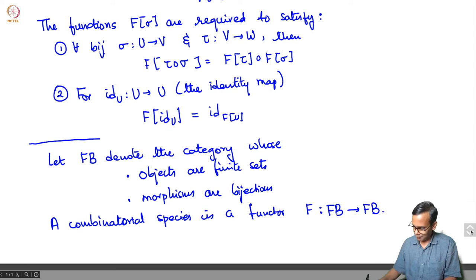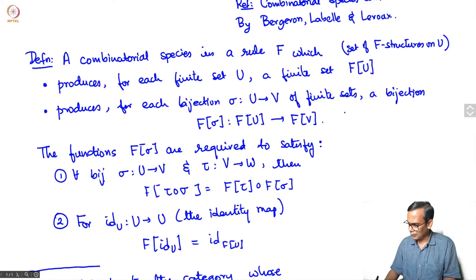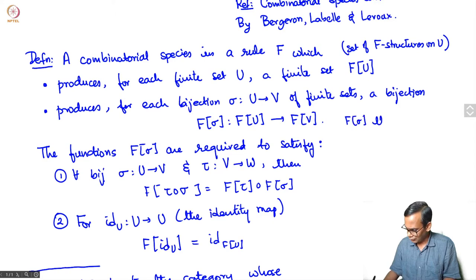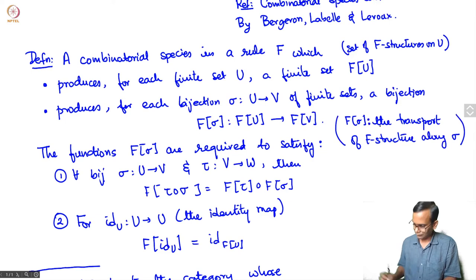Let me give you some examples of species, but before that let me say a little bit about terminology. F(U) is called the set of F-structures on U, and F(sigma) is called the transport of F-structure along sigma.